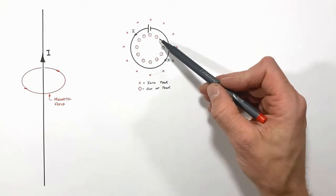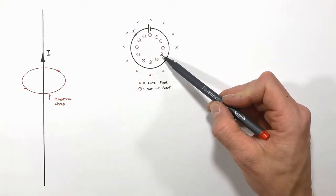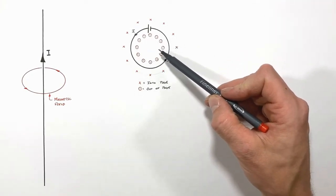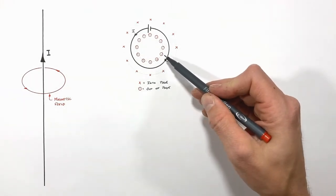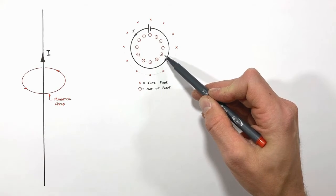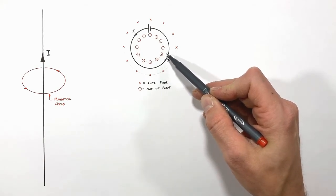This is really important because inside this loop of current-carrying wire we form a very strong magnetic field all in the same direction. The magnetic field here can be pretty tough to visualize, so I'm going to draw this from a different angle so that it's a little clearer.